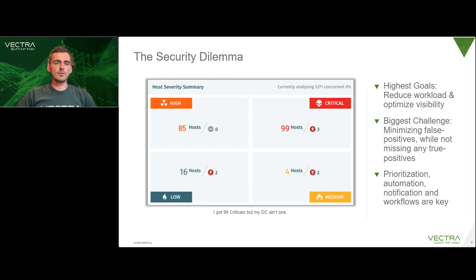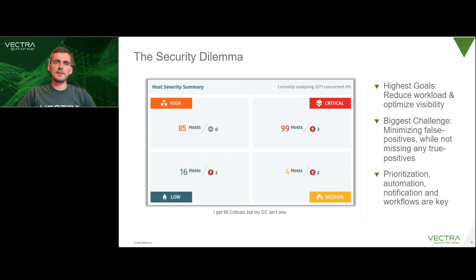Unfortunately, there's a strong inverse relationship between false positives and false negatives. Lowering one of them usually drives up the other. In other words, to not miss any of the relevant stuff, you simply must be overly cautious — some may say a bit paranoid — and this inevitably leads to some number of false positives. This only gets amplified by administrative activity and attacker behavior being so hard to distinguish at times. Therefore, instead of only aiming to reduce the number of false positives, you need to minimize the attention and time you have to spend on them. Prioritization, automation, notification and workflows are key for that.